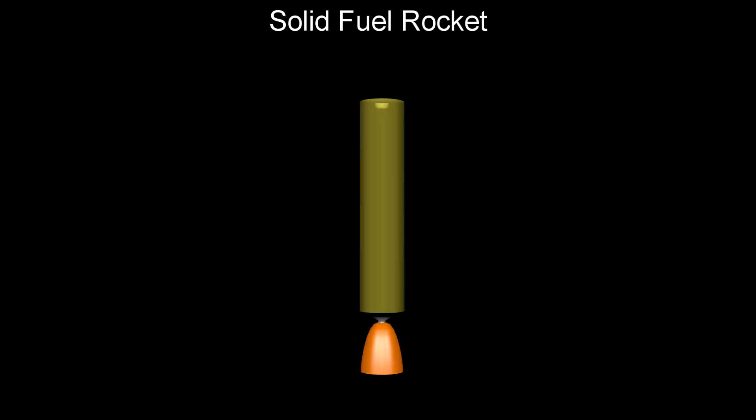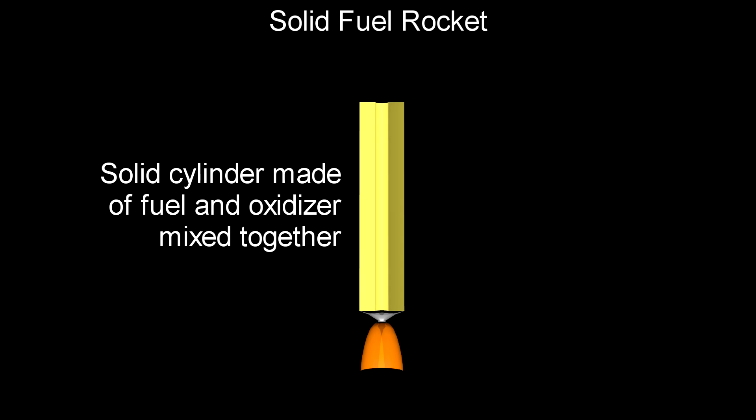In a solid fuel rocket, like the two that were on the space shuttle, the propellant is usually a solid cylinder that gradually burns from the inside out, throwing the burnt results out the back.